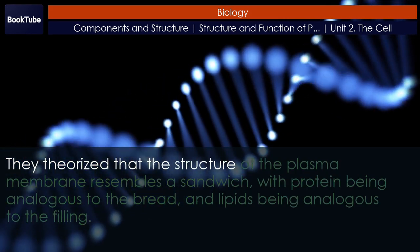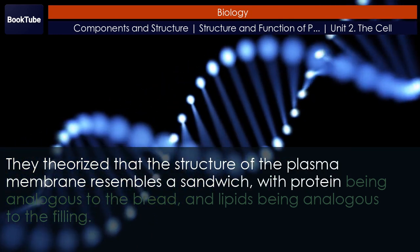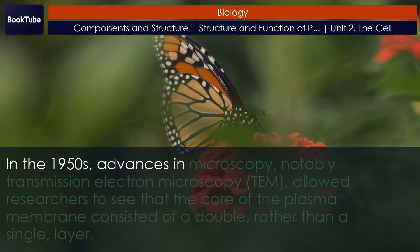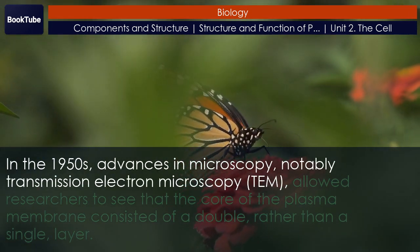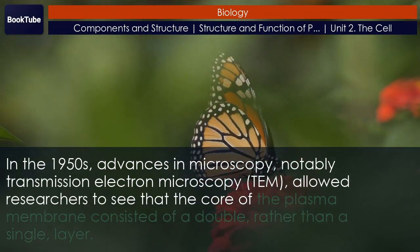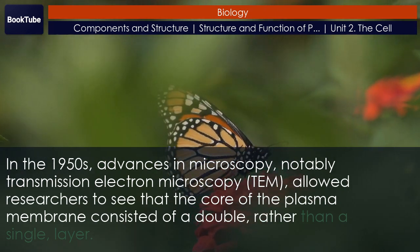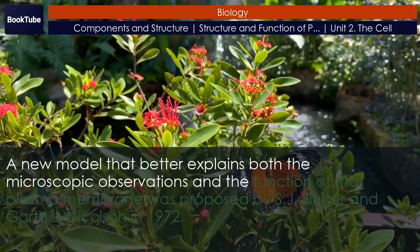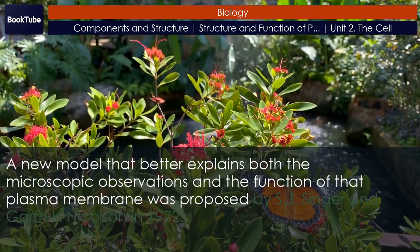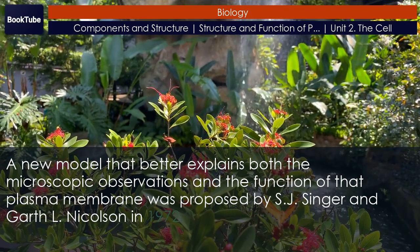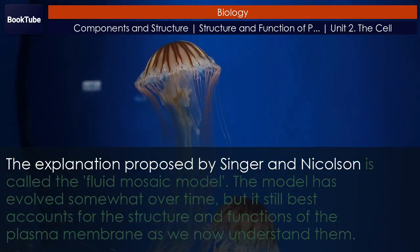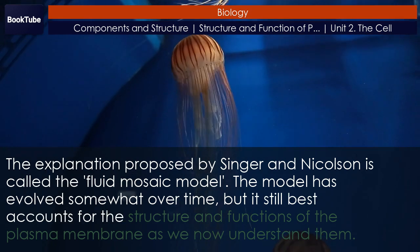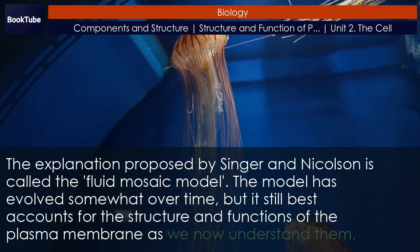They theorized that the structure of the plasma membrane resembles a sandwich, with protein being analogous to the bread and lipids being analogous to the filling. In the 1950s, advances in microscopy, notably transmission electron microscopy (TEM), allowed researchers to see that the core of the plasma membrane consisted of a double, rather than a single, layer. A new model was proposed by S.J. Singer and Garth L. Nicholson in 1972.